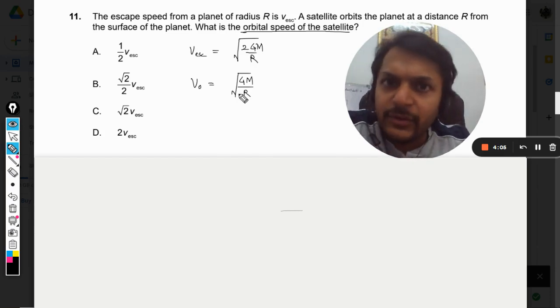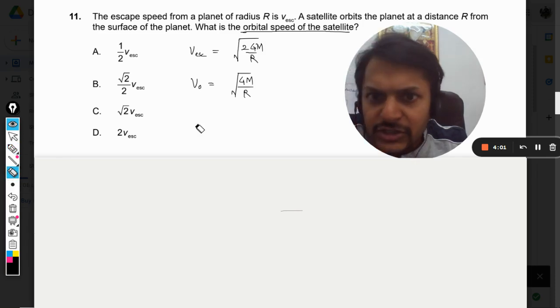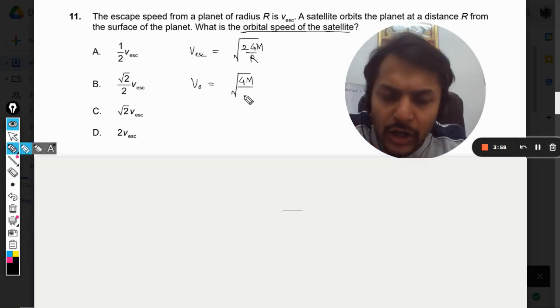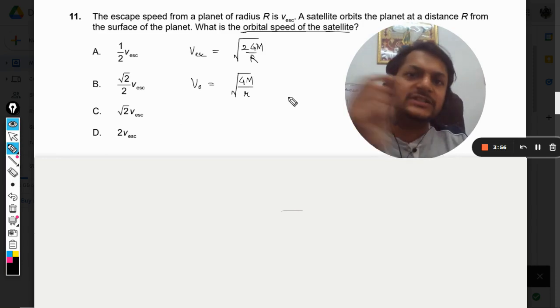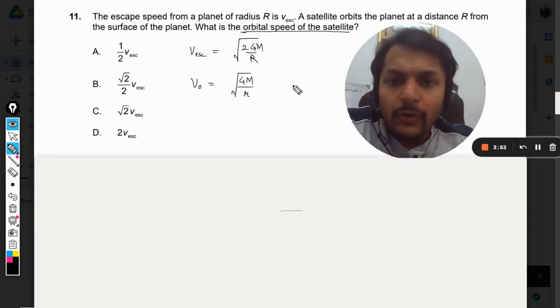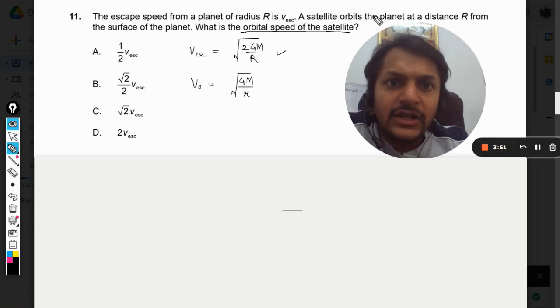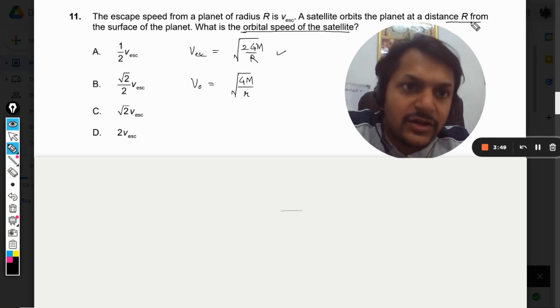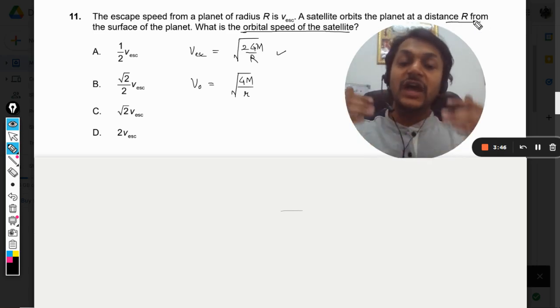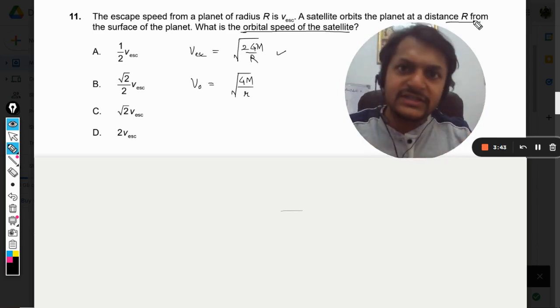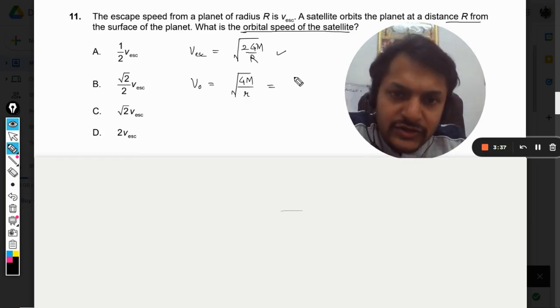Now, this r is the radius of the planet or the radius of the orbit in the case of orbital velocity. I can write this r as small r instead of capital R because the satellite is in orbit now. The satellite is revolving around the planet at a distance R from the surface of the planet, so the radius of the orbit of the satellite should be 2r. So it will be √(GM/2r).